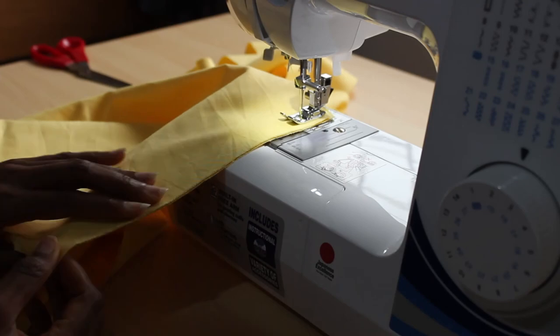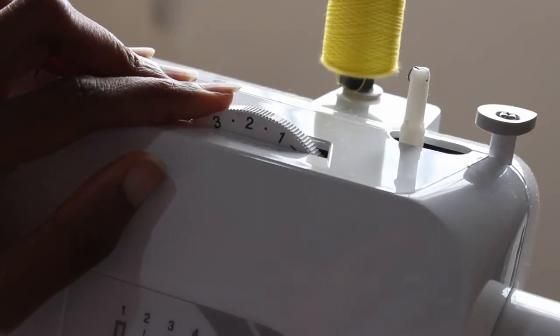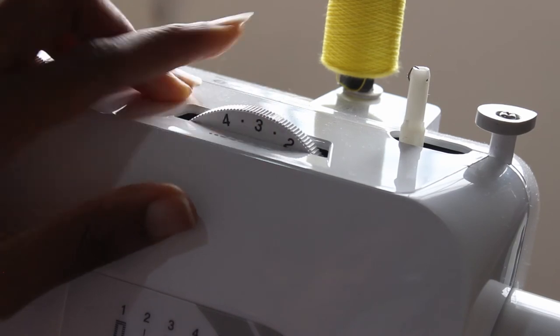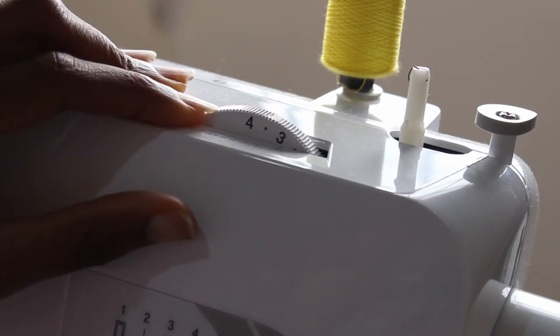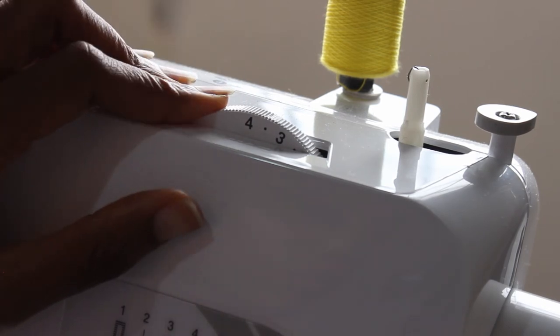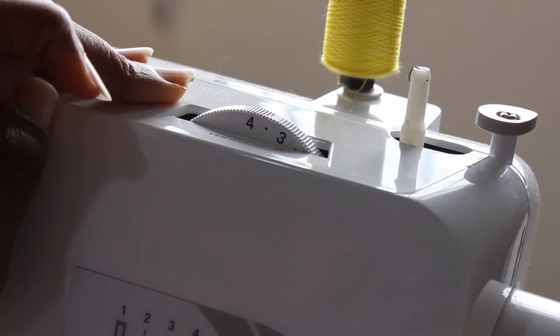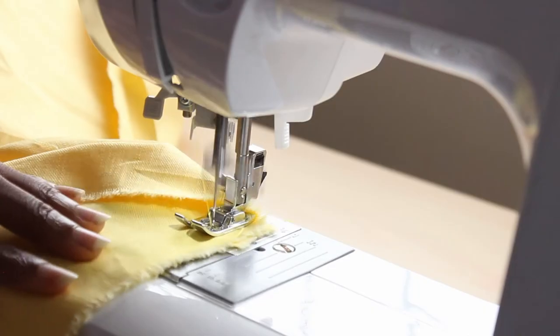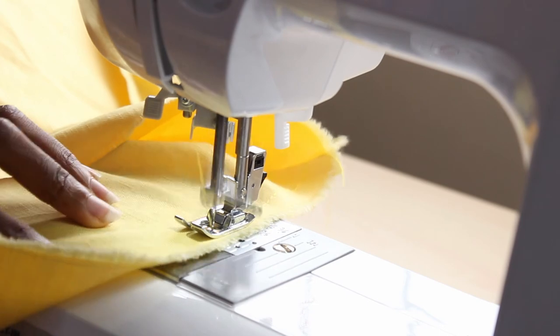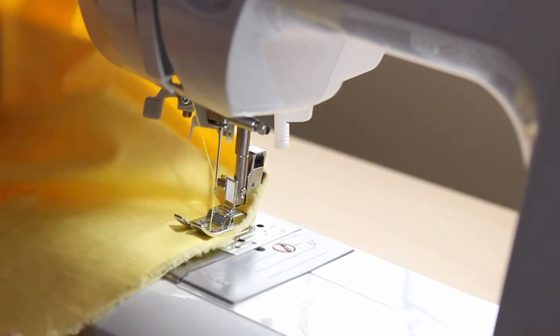Now I'm sewing, just sewing, sewing, sewing. So in order to create fullness I am going to use the highest stitch length that I have, which is a four on my Brother sewing machine. I'm going to turn it to four stitch length and use that to stitch the top of my sleeve without securing the stitches.